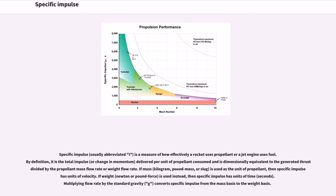If mass is used as the unit of propellant, then specific impulse has units of velocity. If weight is used instead, then specific impulse has units of time. Multiplying flow rate by the standard gravity converts specific impulse from the mass basis to the weight basis.